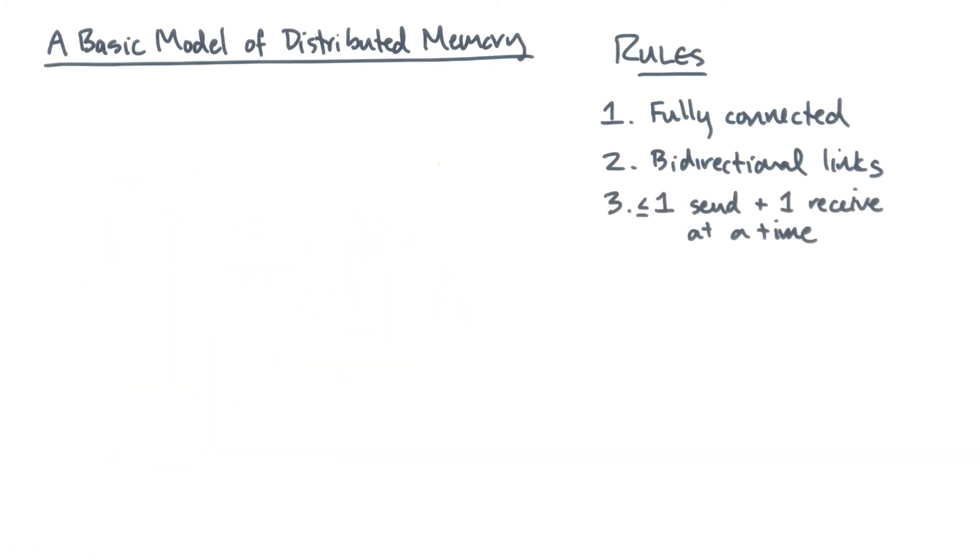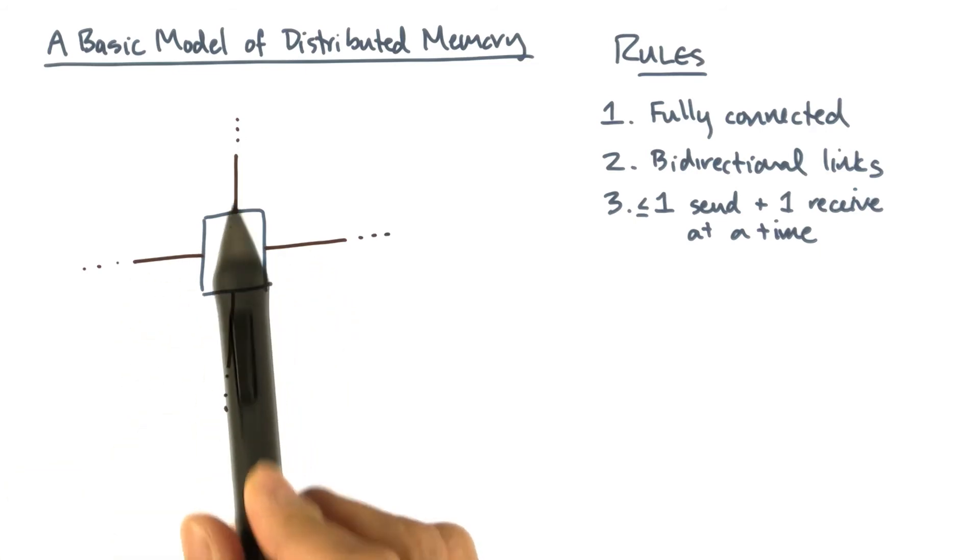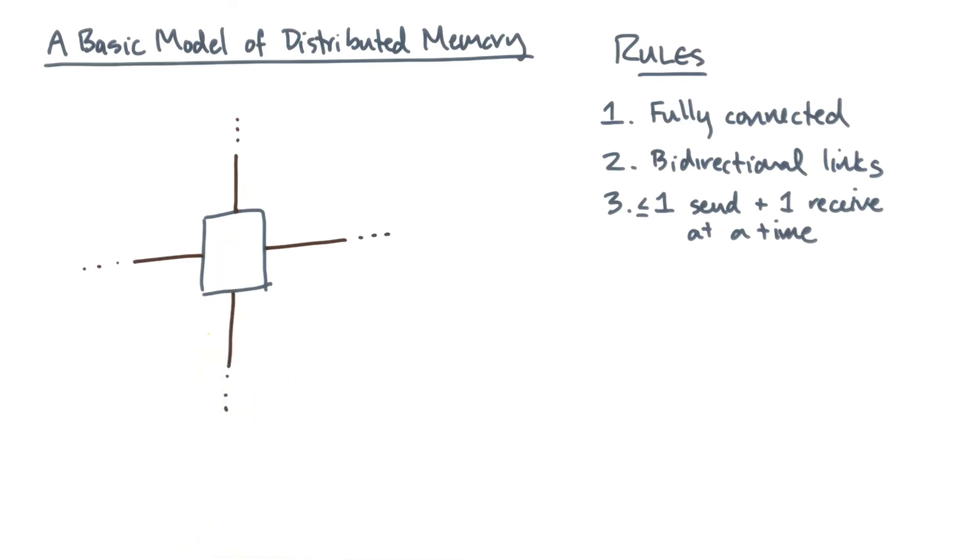The third rule is that you will allow a node to concurrently perform at most one send and one receive at a time. This rule is important because it affects the cost of communication. So for example, suppose this node wants to send a message on each of its outgoing links. In order for this node to send four messages, it's going to have to send them one at a time. By contrast, it could do one send and one receive simultaneously.